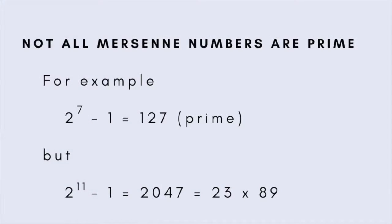For small values of n, whenever n is prime, the corresponding Mersenne number is also prime. For example, when n equals 7, 2 to the n minus 1 equals 127, which is prime, because it has no factors other than 1 and 127.